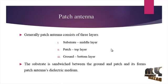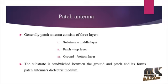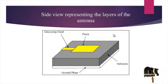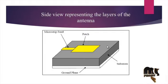Generally, a patch consists of three layers: the substrate, which is the middle layer; the patch, which is the top layer; and the ground, which is the bottom layer. The substrate is sandwiched between the ground and the patch, and it forms a patch of dielectric medium. The side view representing the layers of the antenna shows the microstrip antenna on top, then the substrate, and finally the ground plane of the antenna.